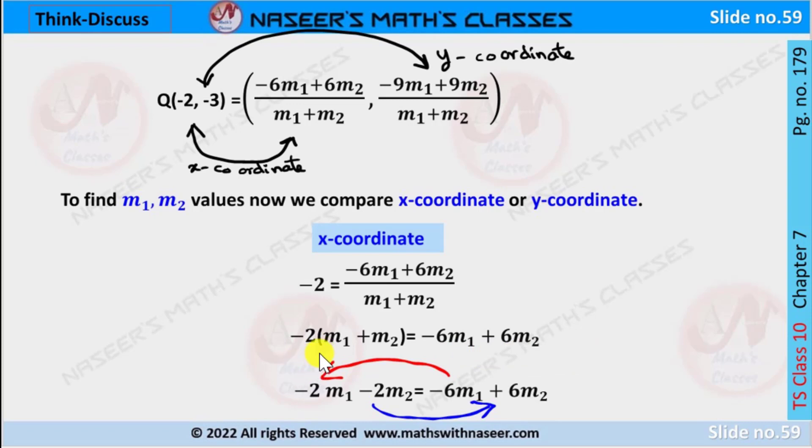We can write -2(m₁ + m₂) as -2m₁ - 2m₂ equals -6m₁ + 6m₂. Now we transpose -2m₂ from LHS to RHS.